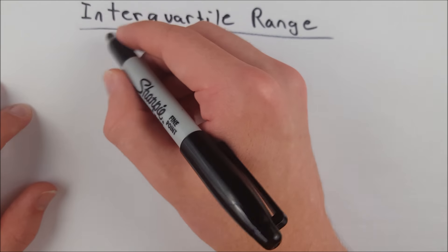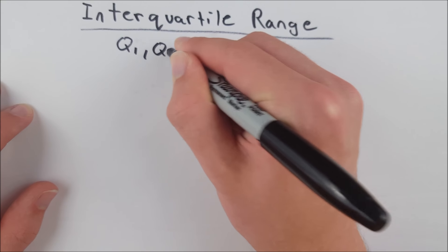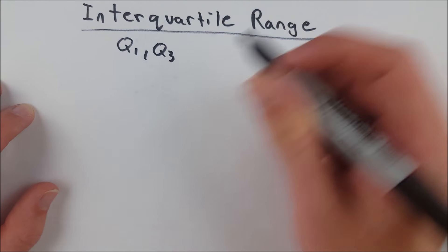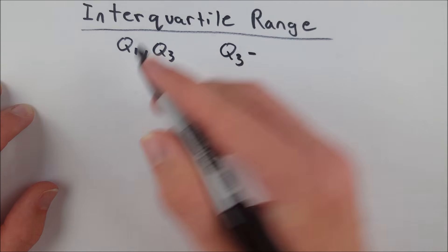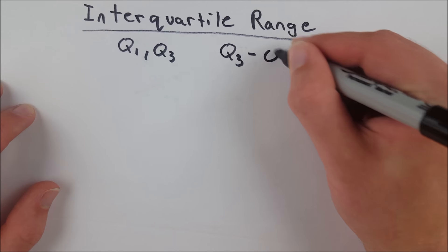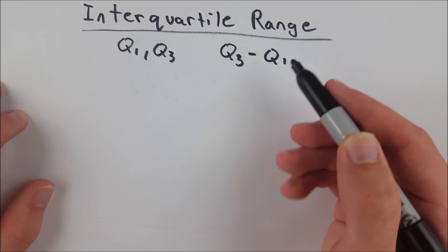Given any set of data, we can find a first quartile and a third quartile of that data. The interquartile range of the data is just the difference between the two, subtracting quartile 1 from quartile 3. So that's the third quartile minus the first quartile.